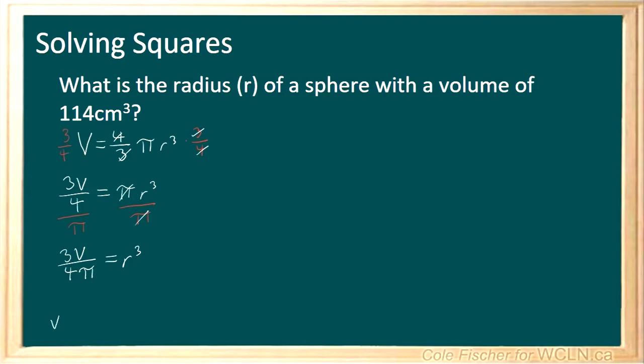So the next step we need to take the cube root of both sides. Similar to how a square root cancels out a square, a cube root cancels out a cube.